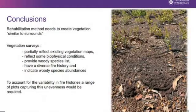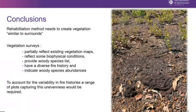So from all that, I guess the conclusions: the rehab methods need to create vegetation similar to surrounds, and the vegetation surveys that have been done partially reflect the existing vegetation maps — they're not perfect. They also reflect some of the biophysical conditions; obviously distance to waterways was a big driver. They do provide a woody species list that forms the basis of the mine rehab plan. They have a diverse fire history, and internally in Georgetown they're not significantly different, but external to the buffer region it is. It does give us an indication of woody species abundance required to be similar to surrounds. To account for that variability in fire histories, the range of plots was recommended to capture that unevenness, and Lorna will talk about why that intersected with the sampling regime later.